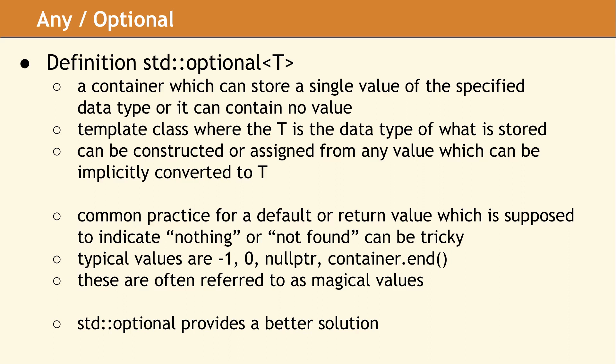The class template std::optional is also a container for a single value. For this class, the value must either be a specific data type T or contain no value. An std::optional can be created from a value of type T or any value which can be implicitly converted to T. The most common place to use std::optional is when you want to indicate there is no value or something was not found in a return type or a parameter.